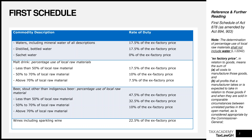Beer and stout — other than indigenous beer — are also subject to the sliding scale. If using less than 50% of local raw material, excise duty is 47.5% of the ex-factory price. If using between 50% and 70% of local raw material, the rate is 32.5%. If using above 70% of local raw material, the rate drops to 10% of the ex-factory price.